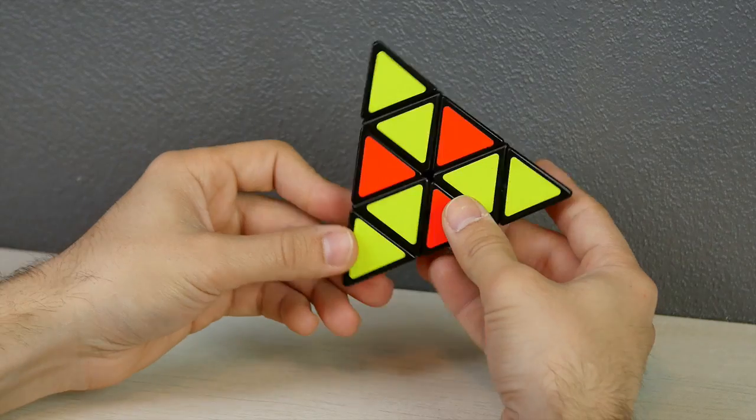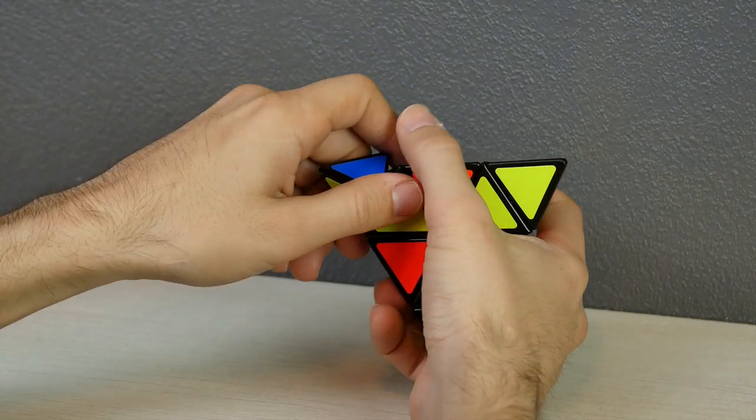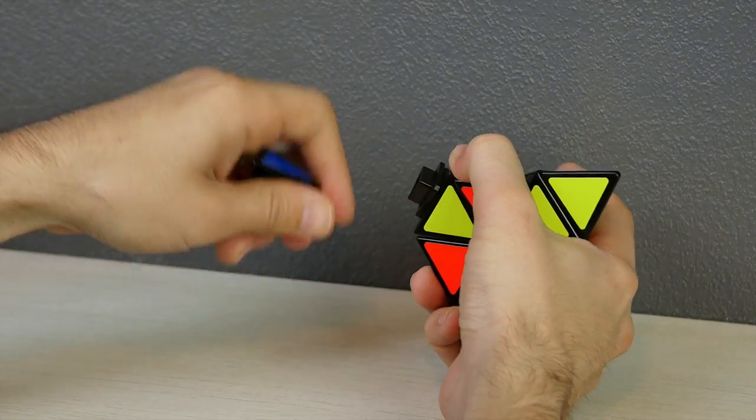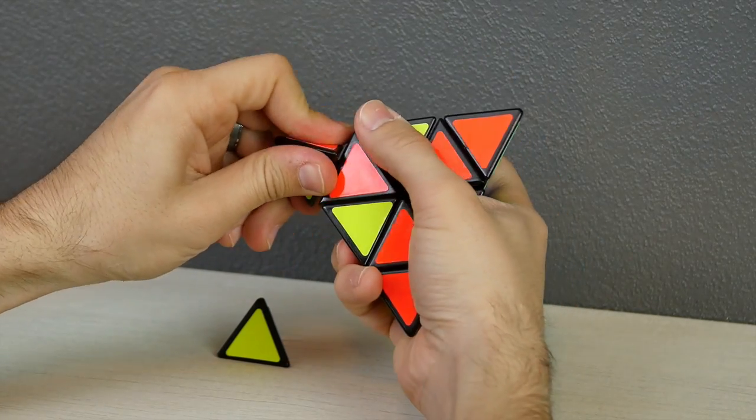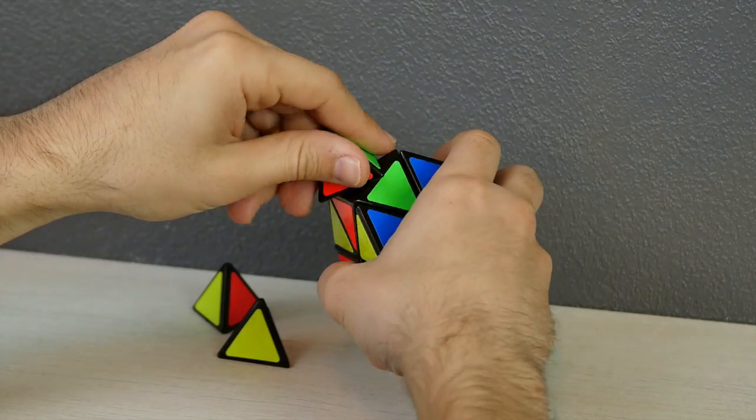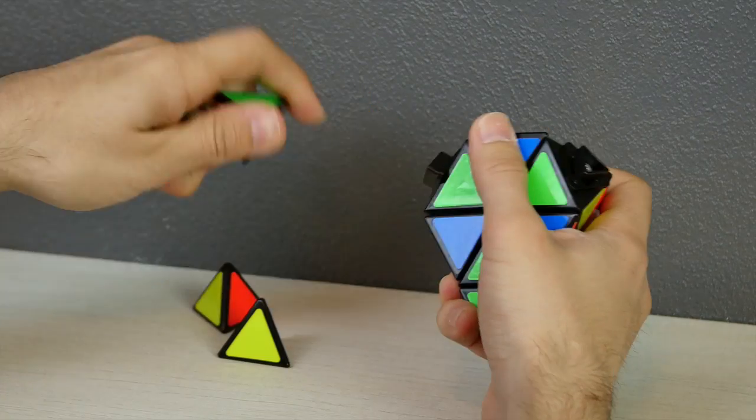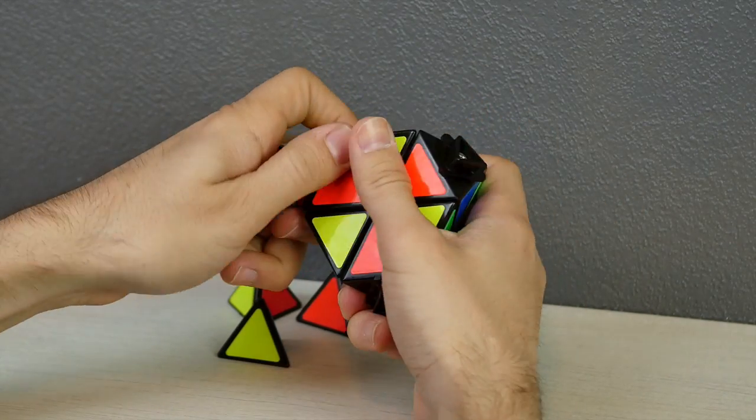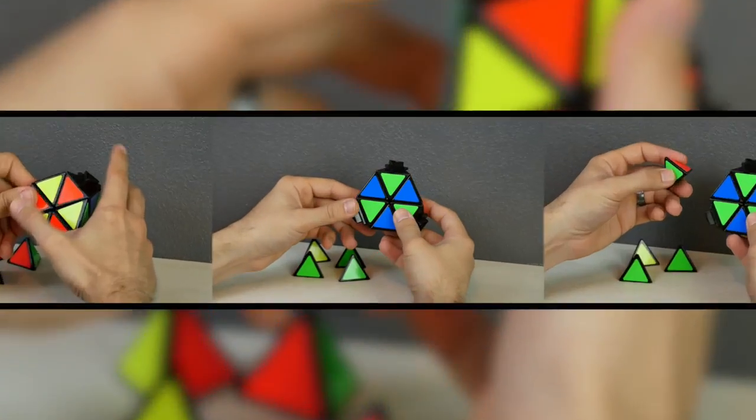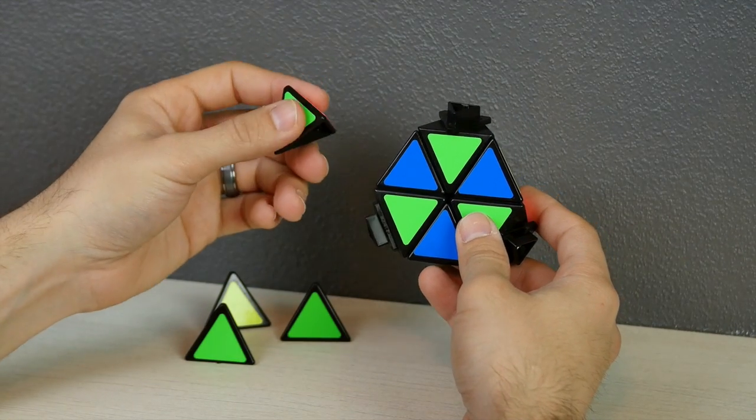If your tips do pop off, let's go ahead and pop those off right now. There's one, two, three, and the fourth tip right here. Now that the tips are off, we just need to match up the colors to complete the checkerboard pattern.